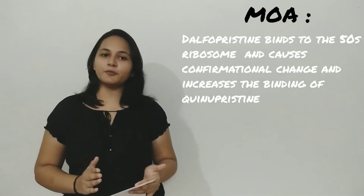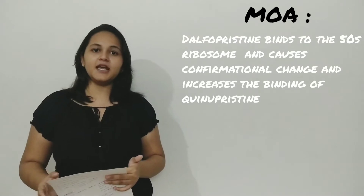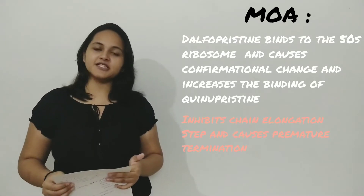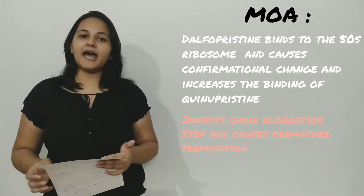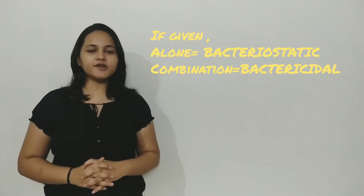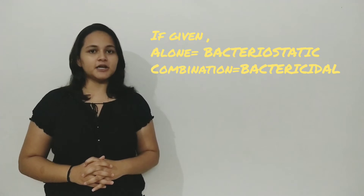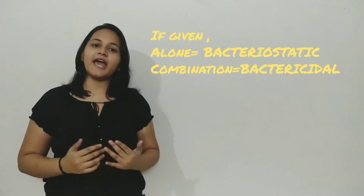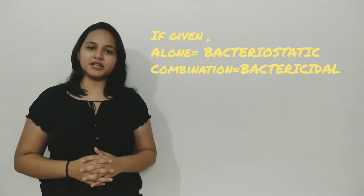Both dalfopristin and quinupristin inhibit the chain elongation step and cause premature termination. If given alone, they are bacteriostatic in nature, but in combination they act as bactericidal. Now we will discuss the antibacterial spectrum of quinupristin and dalfopristin.